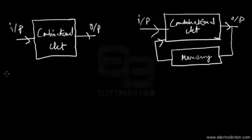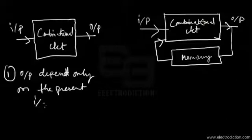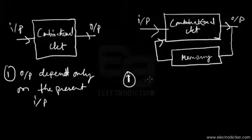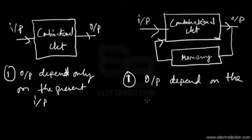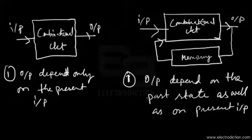The sequential circuit uses stored states to determine the next output state along with the present inputs. In the case of combinational circuits, outputs depend only on the present inputs. In sequential circuits, the outputs depend on the present state of the circuit as well as the past state.